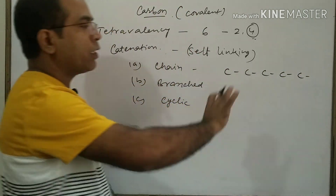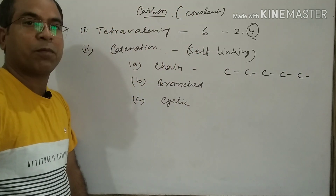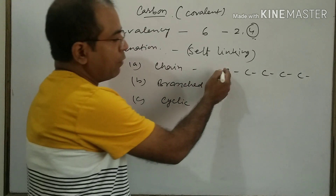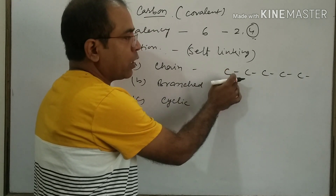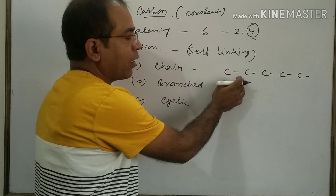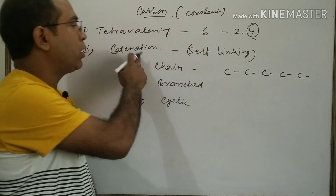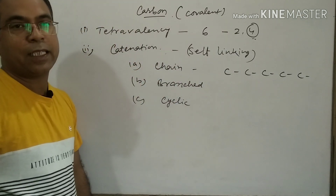An unlimited chain can form. This is self-linking — carbon is linked to itself, and that is called catenation.